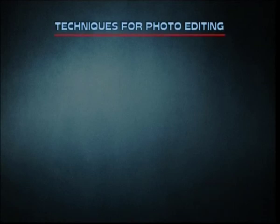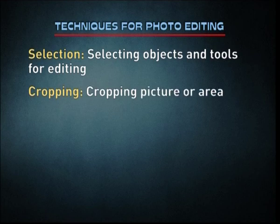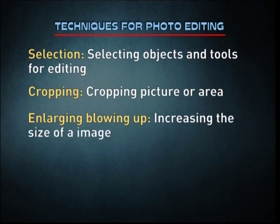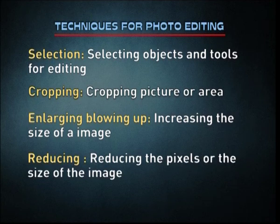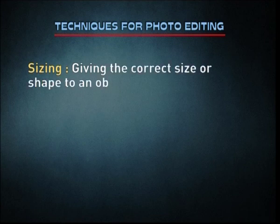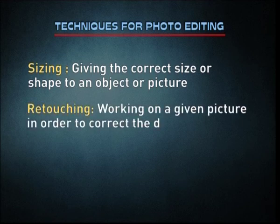Techniques for photo editing: First, selection — selecting objects and tools for editing. Second, cropping — cropping a picture or area. Third, enlarging — blowing up, increasing the size of an image. Next is reducing — reducing the pixels or the size of the image. Then sizing — giving the correct size or shape to an object or picture. Next is retouching — working on a given picture in order to correct the deformities. And finally, reproduction — to produce again an effect.